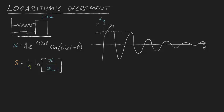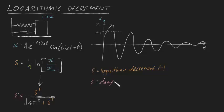It turns out that playing around with this definition and the equation of motion can give us an expression for the damping ratio. Zeta is equal to delta squared divided by the square root of 4 pi squared plus delta squared, where delta is your logarithmic decrement, zeta is the damping ratio, and n is the crest number.